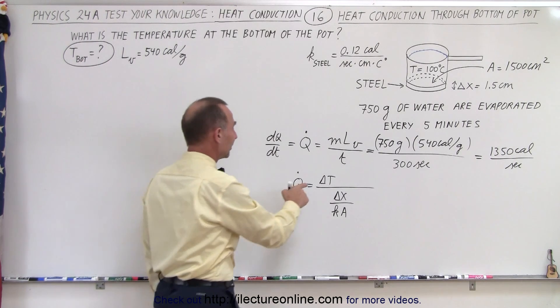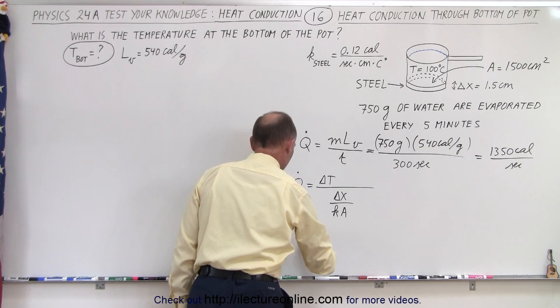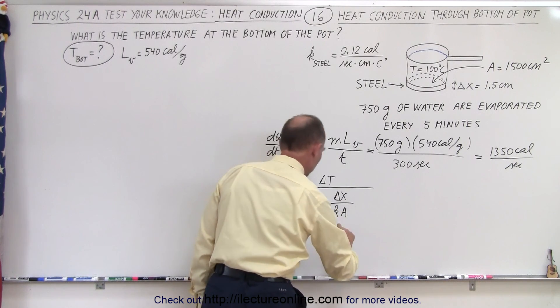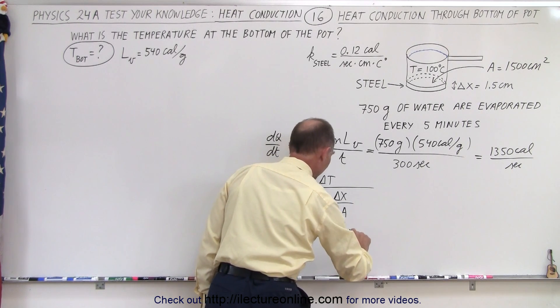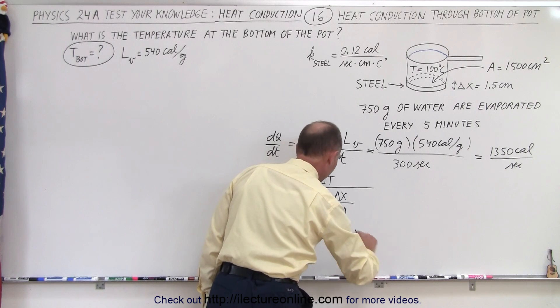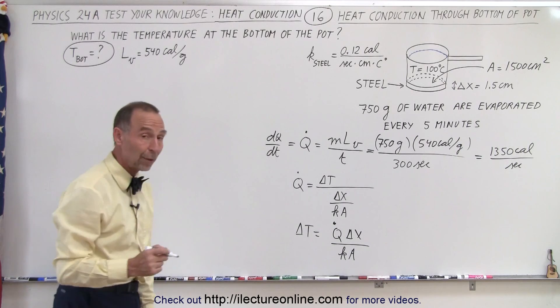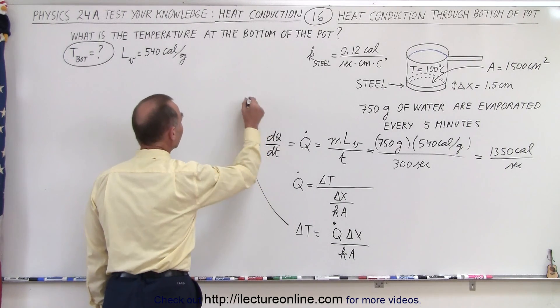Now, what we're looking for is delta t. That means that delta t is going to be equal to Q dot times delta x divided by k times A. So there's our Q dot. So now we need to plug in the numbers and see what we get.